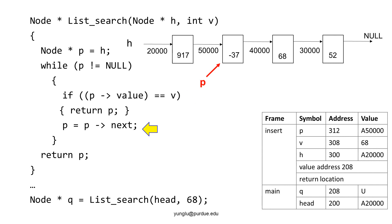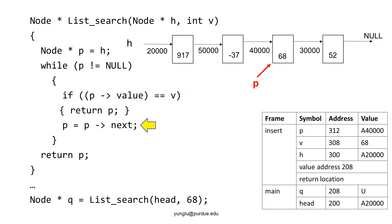This line moves p to point to the next node. At this moment, p points to the second node. P's value stores the address 50,000, and this node stores the value negative 37. The program goes back to check whether p is null or not. This is important: if p stores null, there is no node and we must not attempt to check the value. Since p does not store null, we are allowed to check whether the value is the same as v. The node's value is negative 37 and v is 68 — they do not match. The function moves p to point to the next node and goes back to the top.